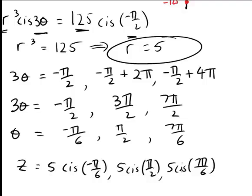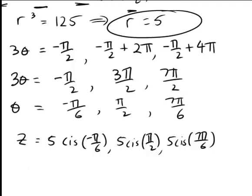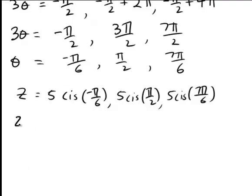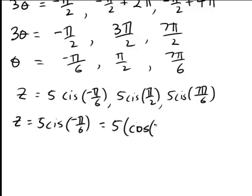So this is our cube roots in polar form. If we wanted to write those in Cartesian form, then remember that cis θ is cos θ + j sin θ. So, for instance, 5 cis(-π/6) is 5 cos(-π/6) + 5j sin(-π/6).